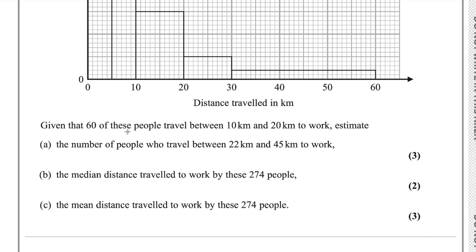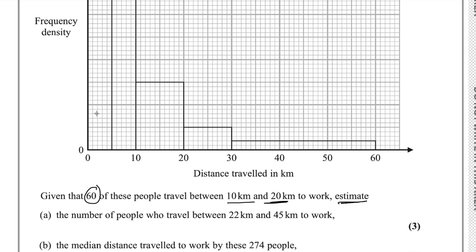The horizontal axis gives the distance traveled in kilometers and the vertical axis shows the frequency densities. But frequency densities are not given. The best approach for these type of questions is to first find the frequency densities using the given information. Let me write that formula here. Frequency density equals frequency over class width.